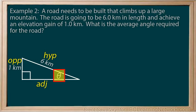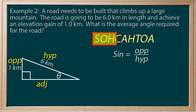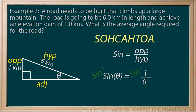Our unknown is theta, and we don't want any other unknowns — just one unknown per equation. We'll need to include our two knowns: 1 kilometer and 6 kilometers. Thinking SOHCAHTOA, sine is the ratio we need. Sine of theta equals 1 over 6. To get theta by itself, we apply the inverse sine on both sides. The inverse sine and sine cancel out on the left, leaving theta. On the right, we have the inverse sine of 1 over 6. Theta is 9.6 degrees, so the angle of inclination of the road is 9.6 degrees.